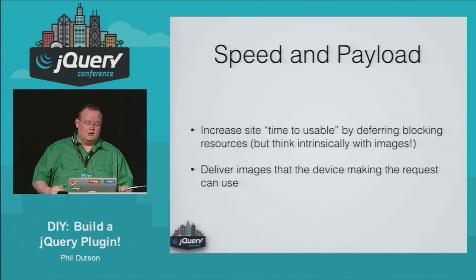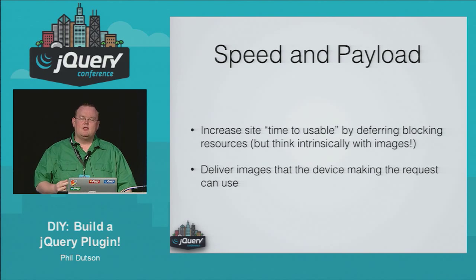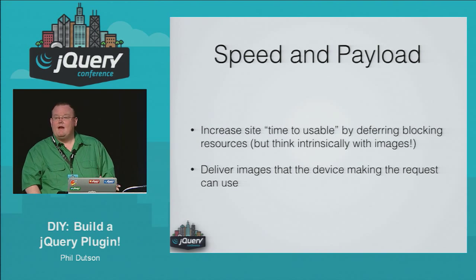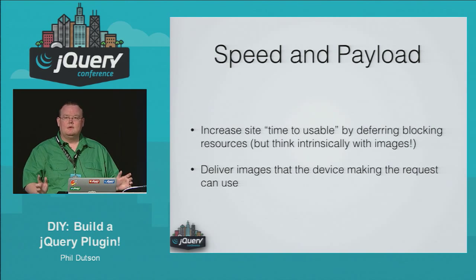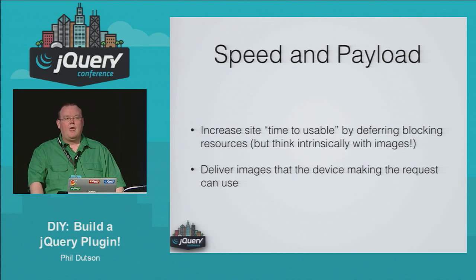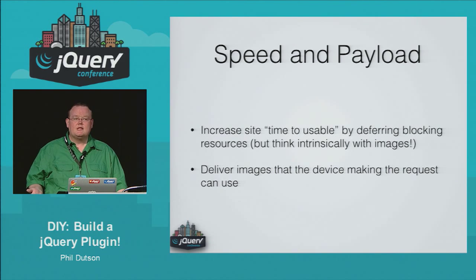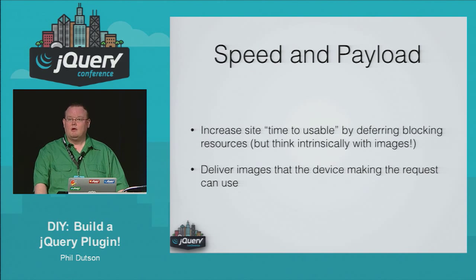You need to make sure the image you're serving to a device can actually be used by that device. WebP is one of my absolute favorite new image formats, and it's great to see websites adopting it because you get an amazing compression ratio. But there's a problem — it doesn't work for every browser. Safari laughs at it, Firefox doesn't use it. You're pretty much down to Chrome and Opera, since they use the same rendering engine.